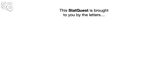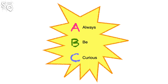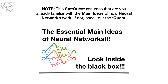This StatQuest is brought to you by the letters A, B, and C — always be curious. Note: this StatQuest assumes that you are already familiar with the main ideas of how neural networks work. If not, check out the quest.